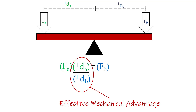Now let's say perpendicular distance A is twice as far from the pivot point as perpendicular distance B — we now have a ratio of 2 to 1. That means we get an amplification of force: however much force we put in at A, we get twice the force out at B. Conversely, if perpendicular distance B is twice as far from the pivot as distance A, the effective mechanical advantage becomes one-half. Our output force is only half the input force — in other words, we are at a mechanical disadvantage and get less force out of our lever than we put in.